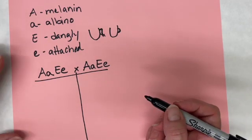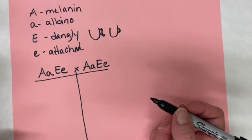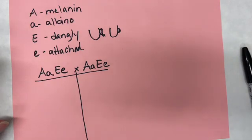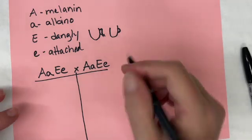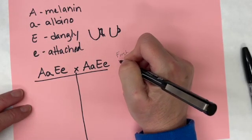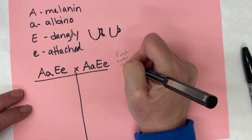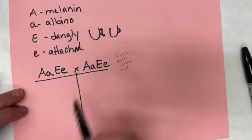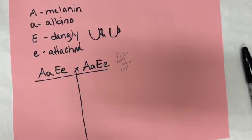So when we have a dihybrid cross there's a little trick that is nice to use to figure out the gametes, and I call it the FOIL method. FOIL in math stands for first, outer, inner, and last. In math class you would do it across the multiplication sign, but this is not really the way it works in biology because in biology we're not making gametes with another person—we make our own gametes.